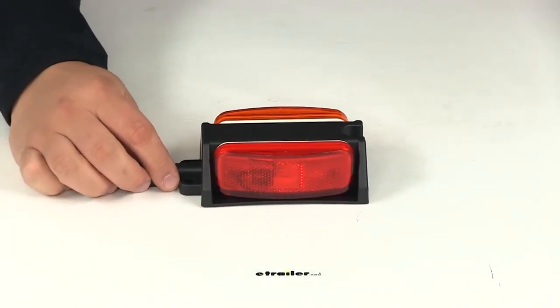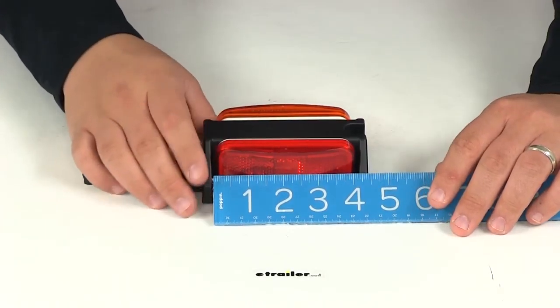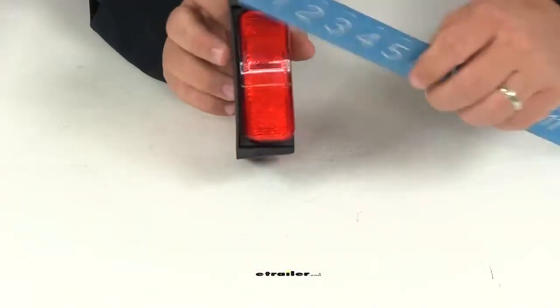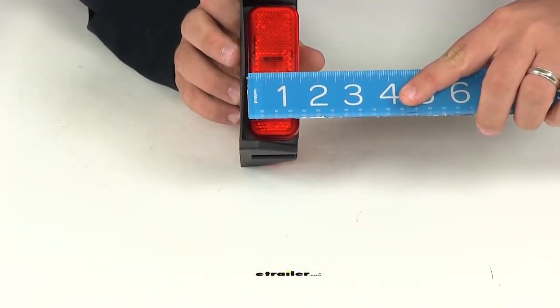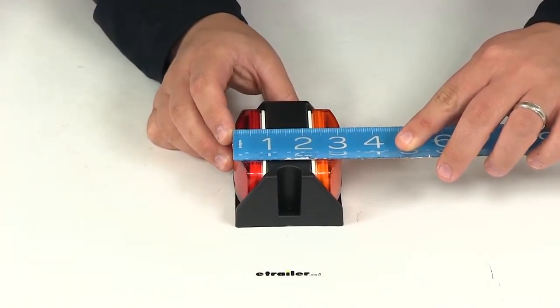Now the actual lights on the unit measure four inches long. They have a width of an inch and a half and a depth of about one inch.